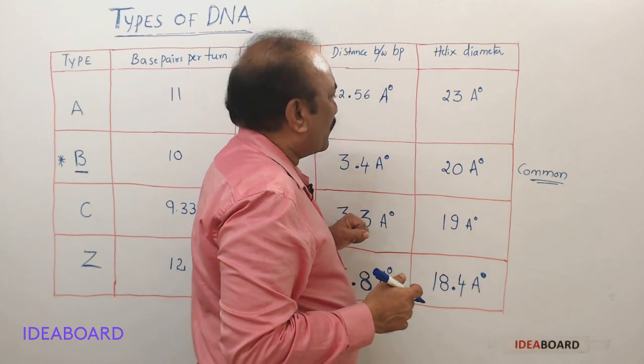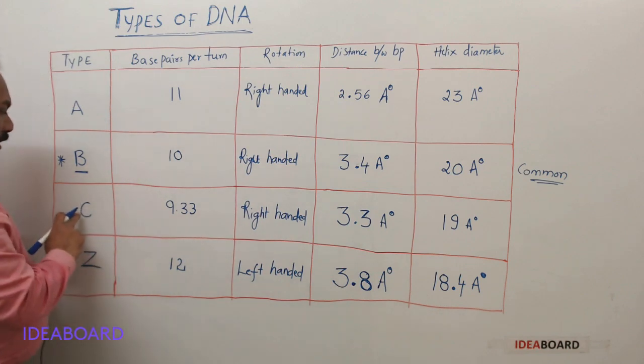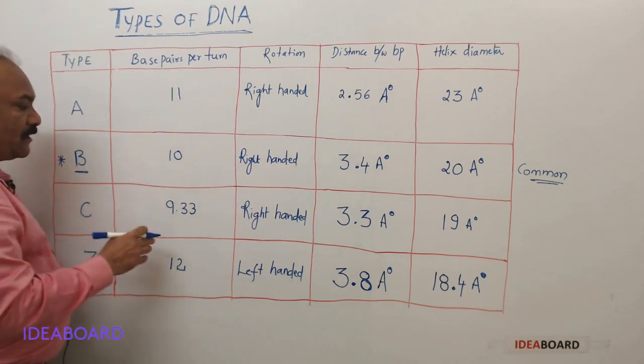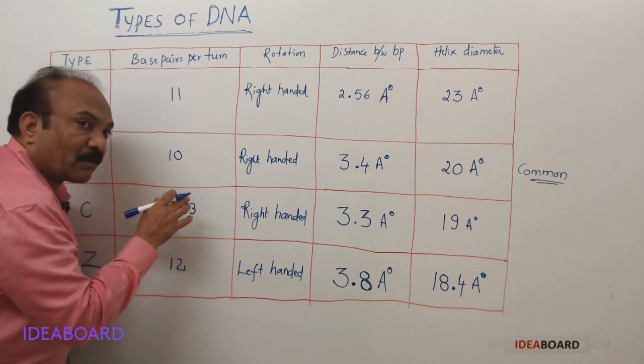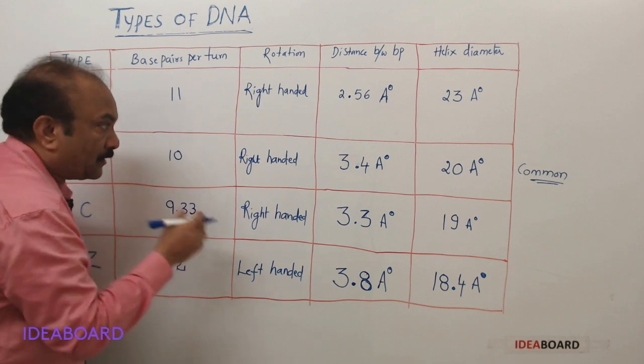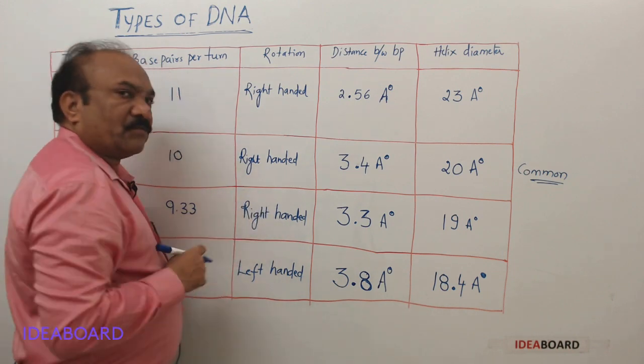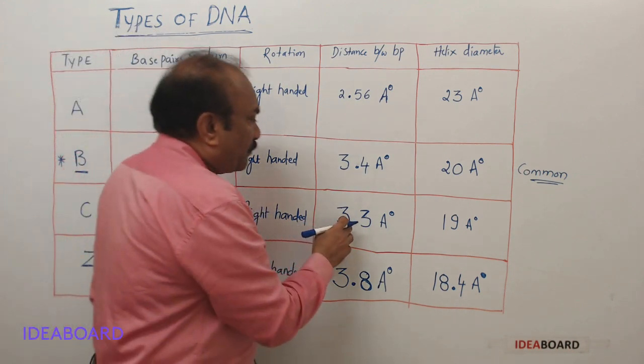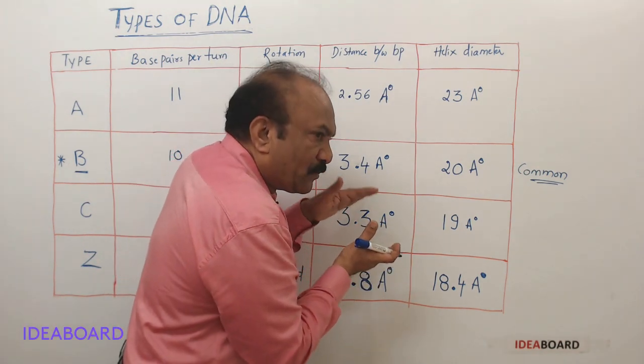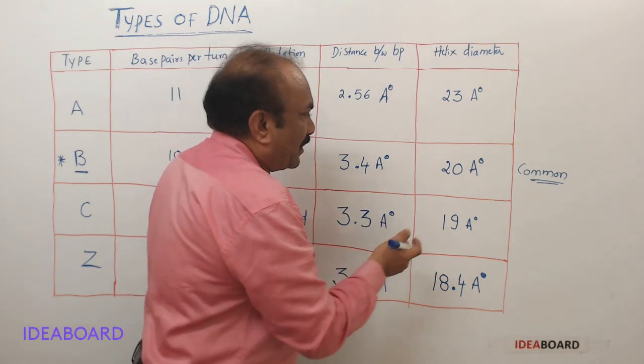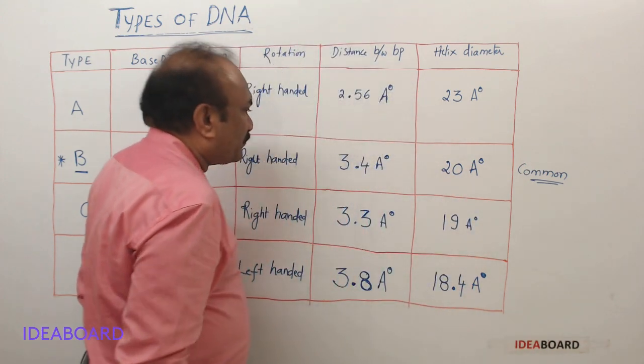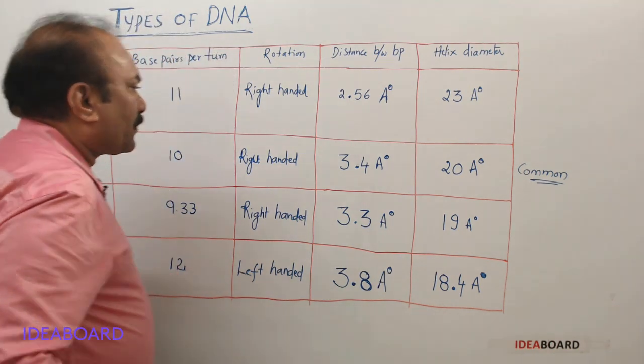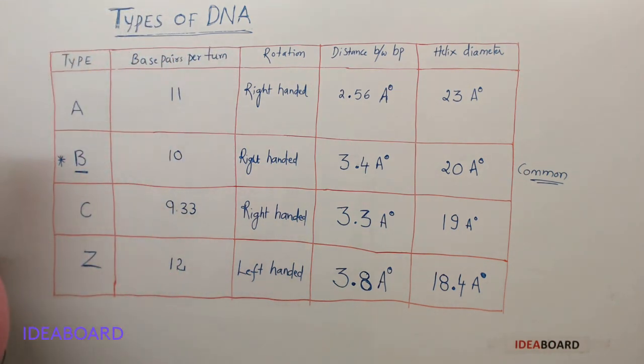The C-DNA is having 9.33 base pairs per turn or per coil, and this is also right-handed helix with 3.3 angstroms distance between two base pairs, and the width is 19 angstroms.